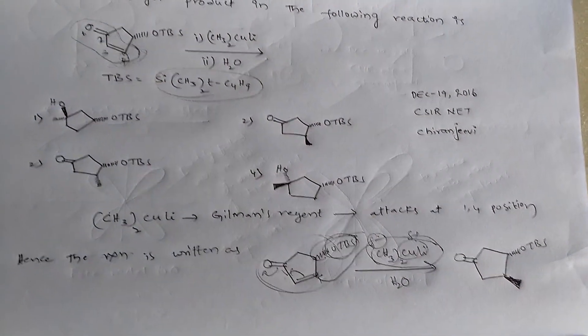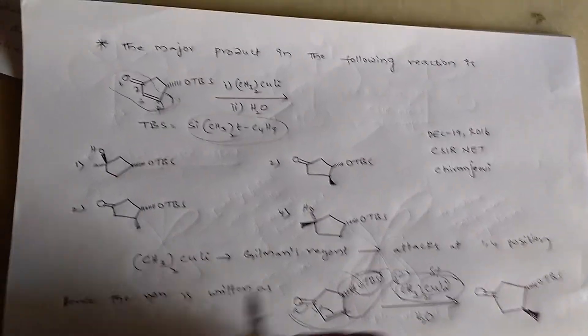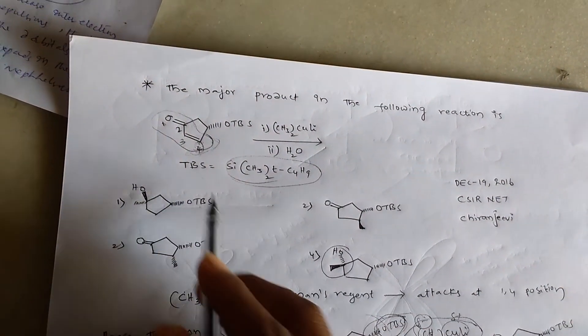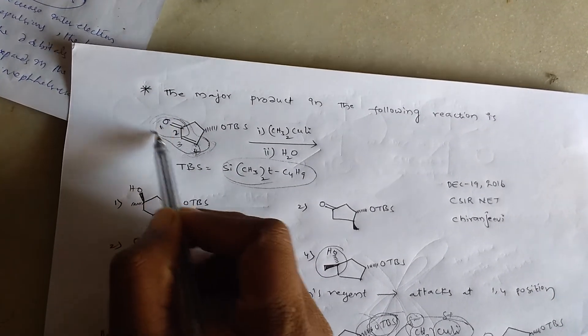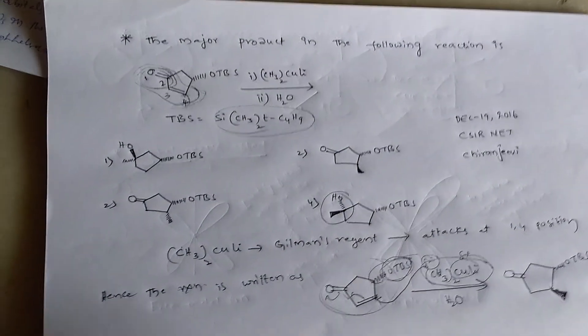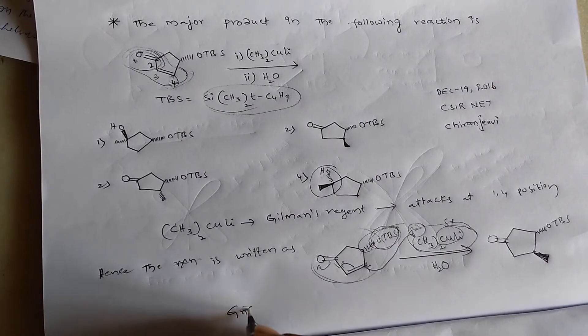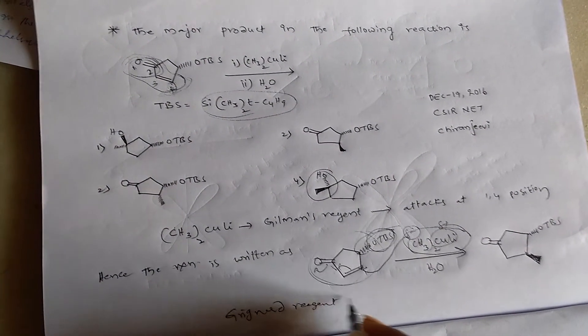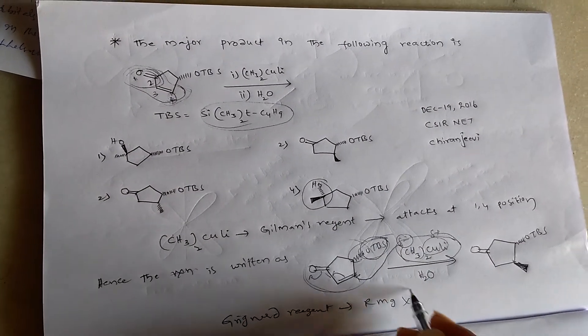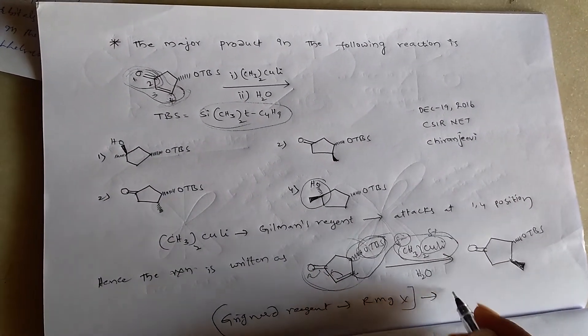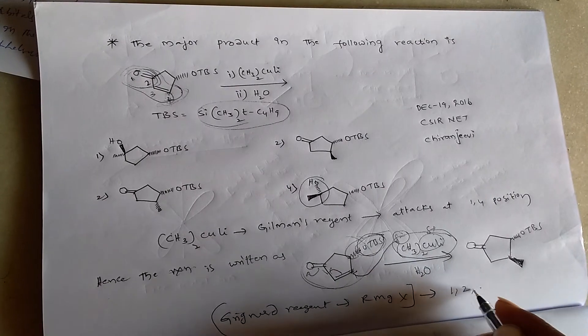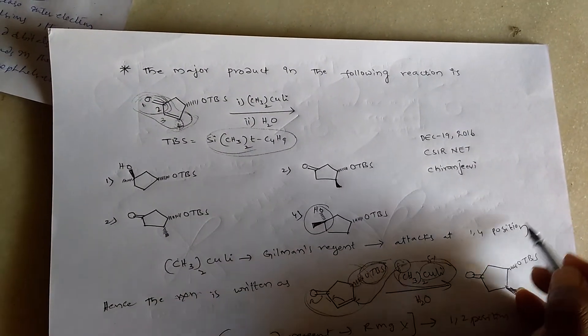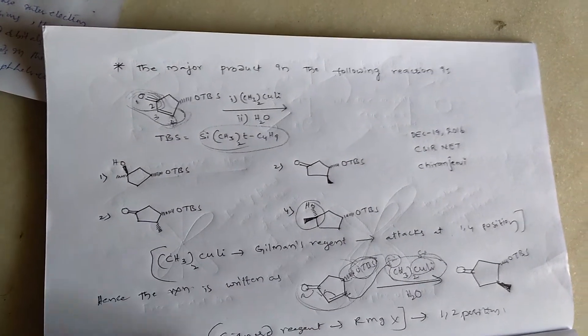Okay, right, so this product is possible. That means, 1-2 attack is possible with the Grignard reagent or MGX. Gilman's reagent attacks at 1-4 position. Remember this.